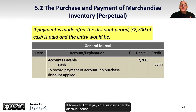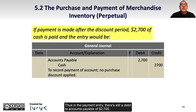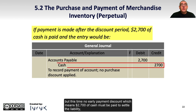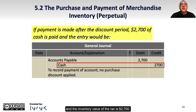If, however, Excel pays the supplier after the discount period, they basically forfeit the discount and will have to pay the full amount owing of $2,700. Thus, in the payment entry, there's still a debit to accounts payable of $2,700, but this time no early payment discount, which means $2,700 of cash must be paid to settle the liability, and the inventory value of the car is $2,700.